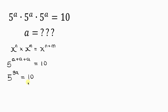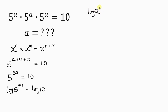Our next step will be to take the log of both sides. So I'm going to take the log of the left hand side: log 5 to the power of 3A, equal to log 10. Now I'm going to apply the law of logarithm, which says that whenever I have a log of a number — let's say A raised to a power n — we can take the power n and multiply it with log A. So applying this, I take the power 3A and multiply log 5, equal to log 10.